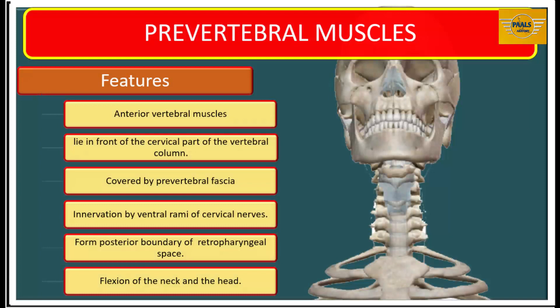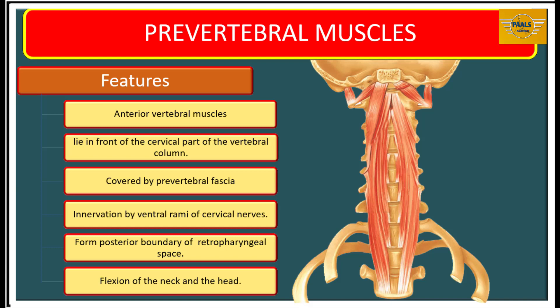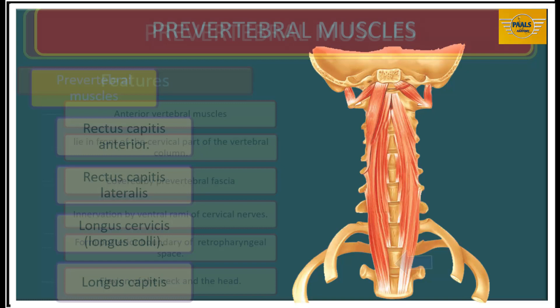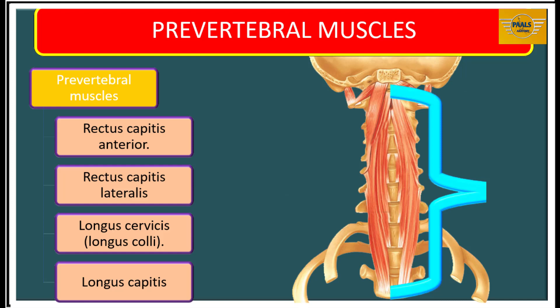We will start with the pre-vertebral region. This is the region anterior to the cervical vertebra. It extends from the first cervical vertebra down to the upper thoracic vertebra. Covering this region are muscles called pre-vertebral muscles, also called anterior vertebral muscles because they all lie in front of the cervical part of the vertebral column. All of them are covered by pre-vertebral fascia, supplied by ventral rami of cervical nerves, and they form the posterior boundary of the retropharyngeal space. As a group, they flex the neck and also flex the head on the neck.